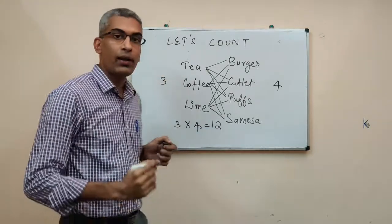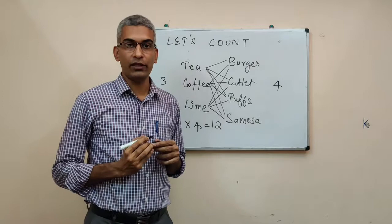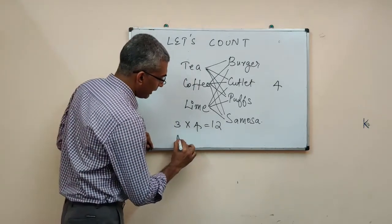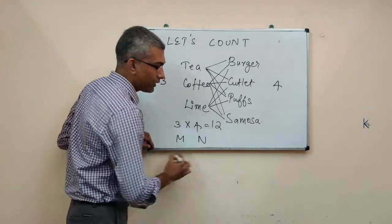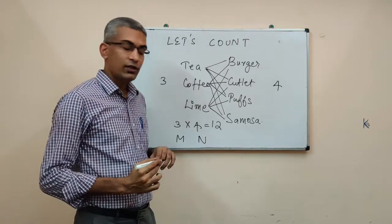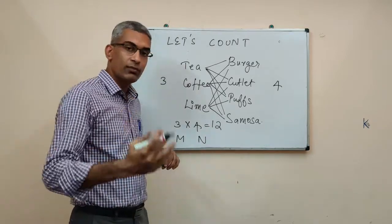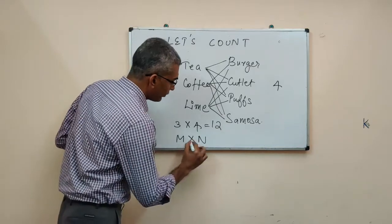Both of them together can be had in three into four or twelve ways. This is what we call multiplication principle of counting. That is, if a certain thing can be done in m ways and another thing can be done in n ways, then the number of ways in which both of them can be done will be m into n.